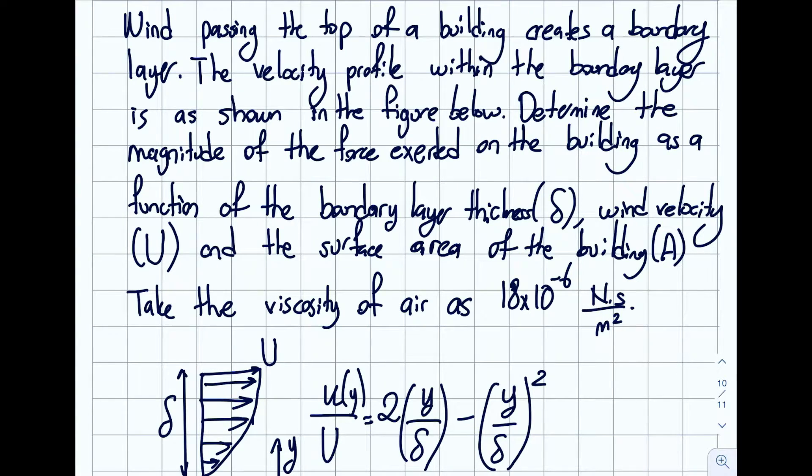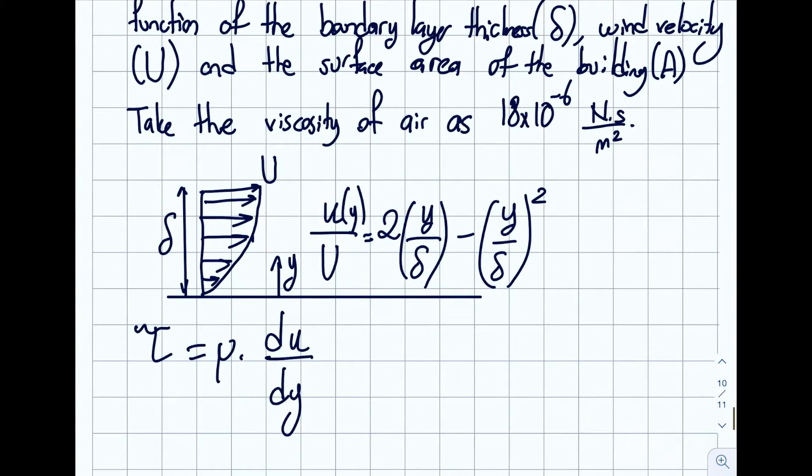Take the density of the air as 18 times 10 to the minus 6 newton second per meter square. Before solving it, let me talk a little bit about the boundary layers. I have a wind with velocity capital U, and when the wind interacts with a solid surface they will generate a boundary layer.